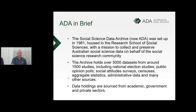The Australian Data Archive has been around for a little while, based at the Research School of Social Sciences at ANU. Our mission is to collect and preserve Australian social science data on behalf of the social science research community in Australia and internationally. We've developed a collection of over 5,000 data sets, over 1,500 different studies from various sources — academic, government and private sector. As our holdings have developed, our understanding of provenance has developed alongside, helping researchers who might be secondary users of our data understand where it came from.